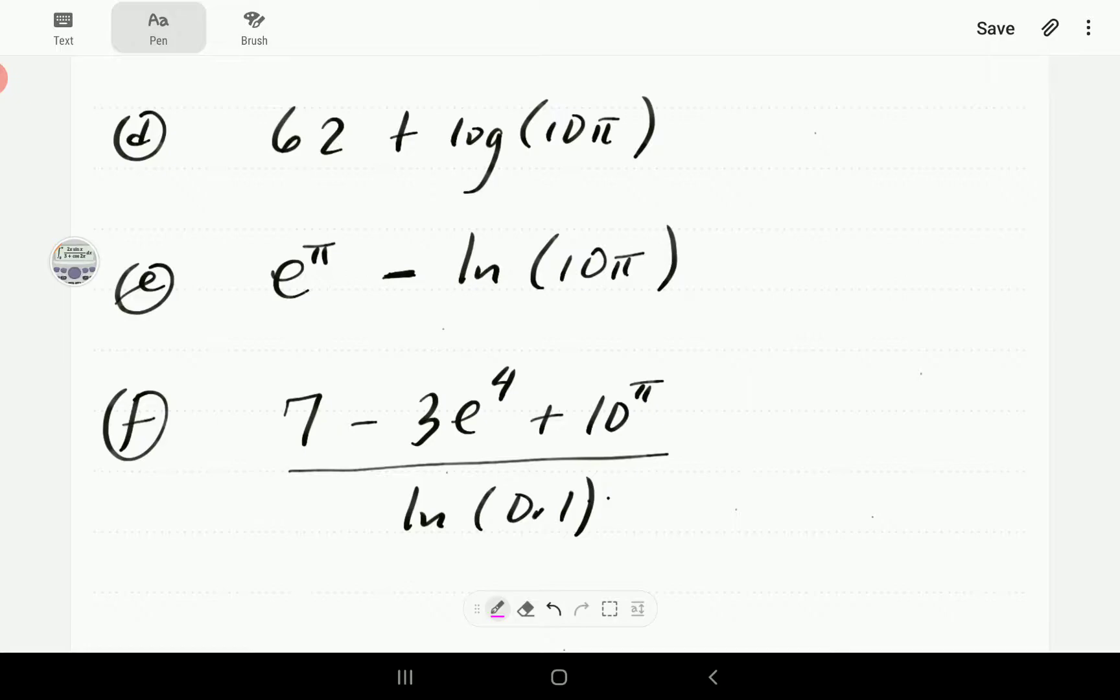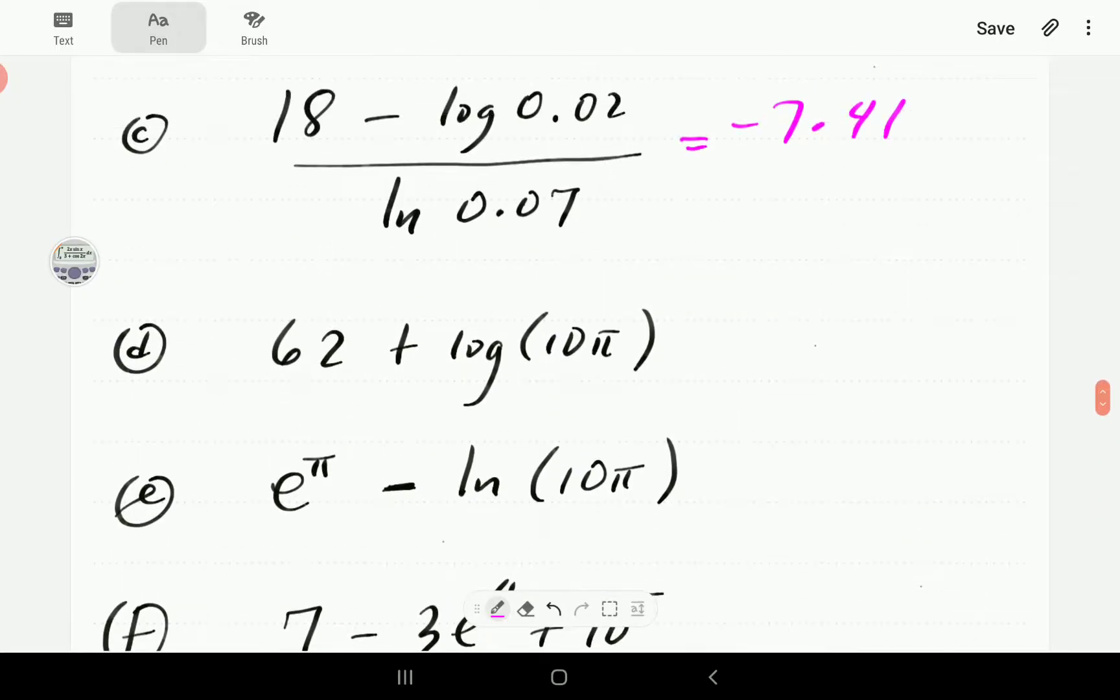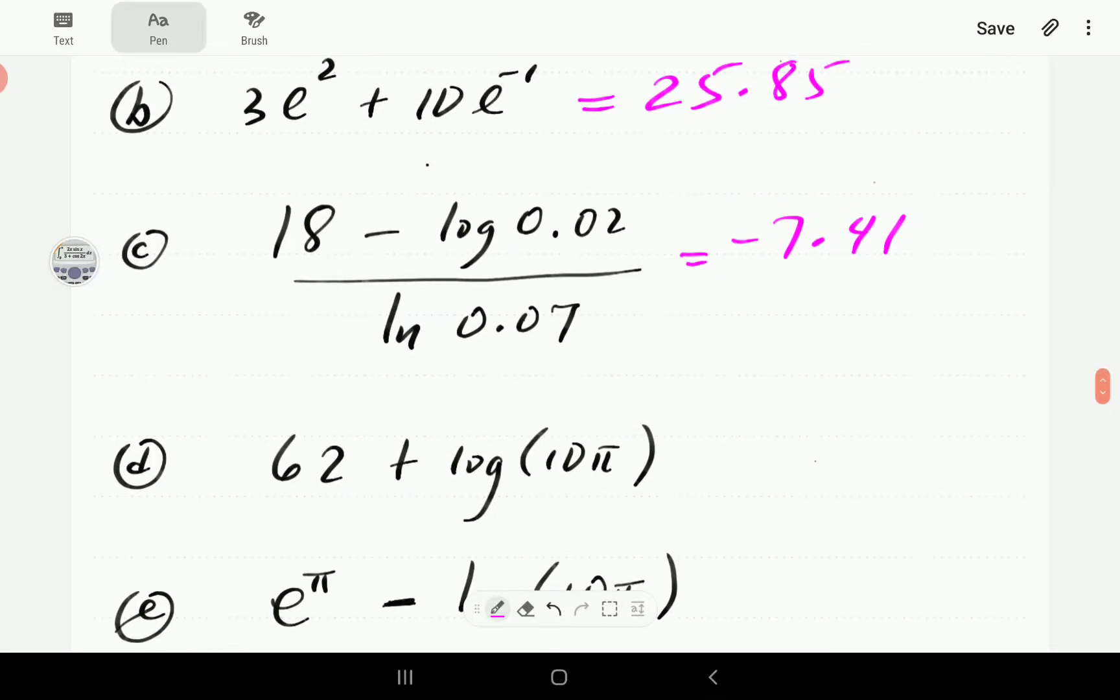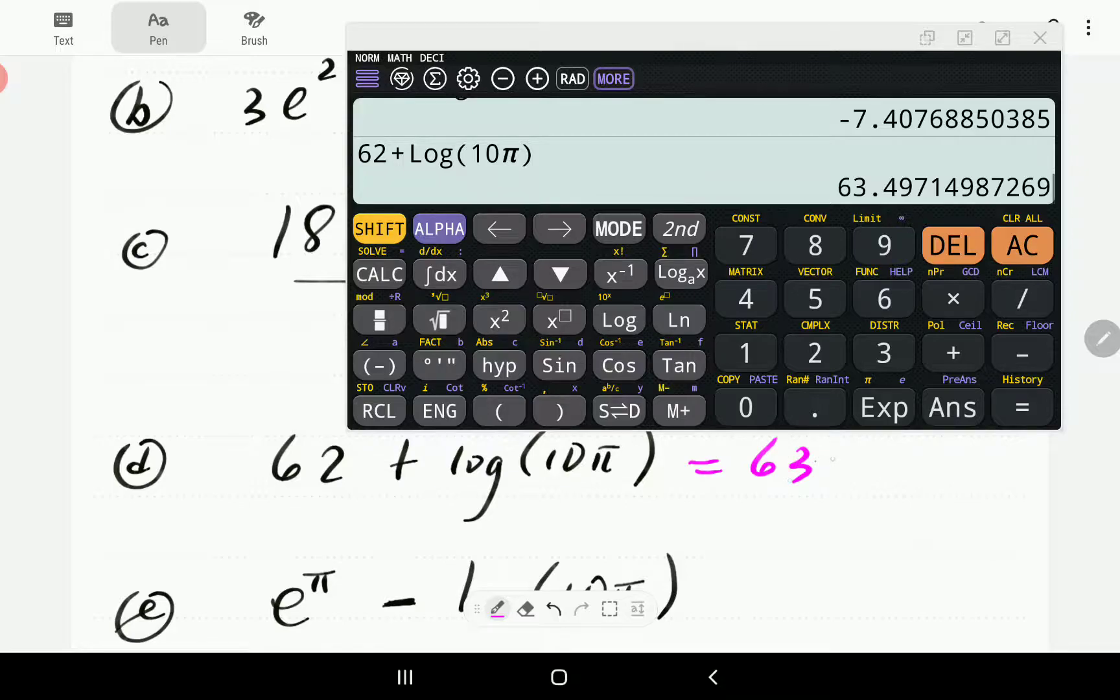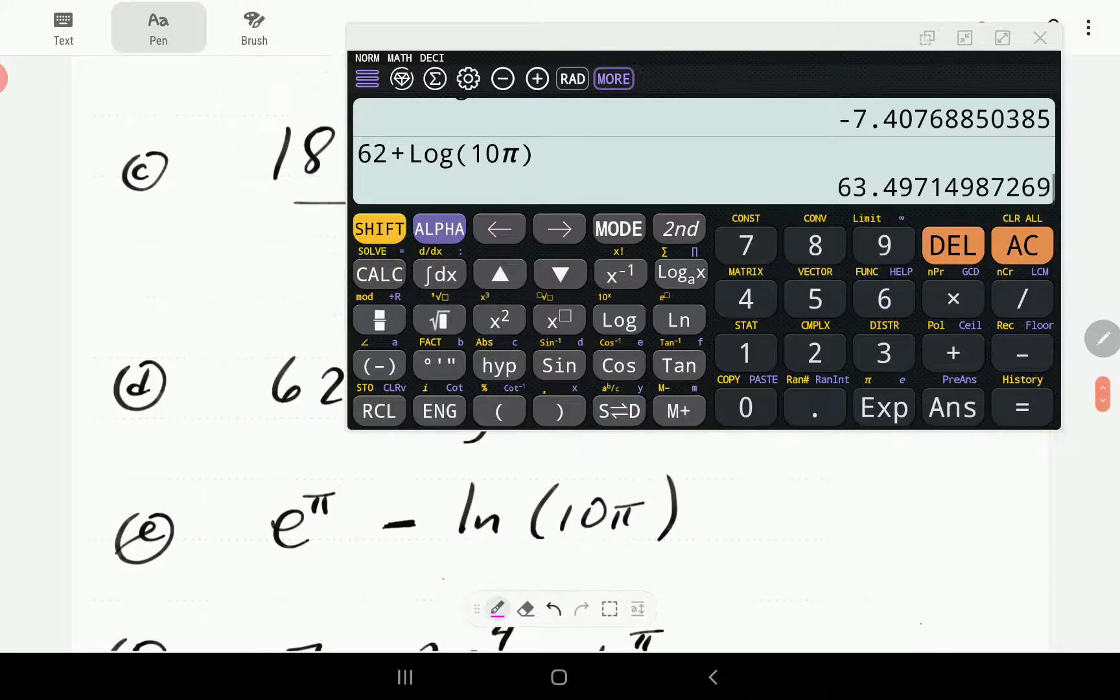Starting with D, we've got 62 plus the common log of 10 pi. We're going to go log, then 10, and then we've got to look for pi, second function of that. This is 63.50 correct to two decimal places.